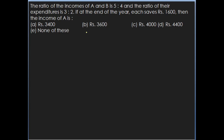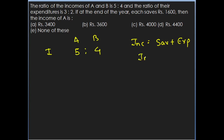The next question: the ratio of the incomes of A and B is 5 is to 4, and the ratio of their expenditure is 3 is to 2. If at the end of the year each saves Rs. 1600, then the income of A is? We know income equals savings plus expenditure, so income minus savings equals expenditure. From this income, subtracting savings gives the expenditure ratio of 3 is to 2.